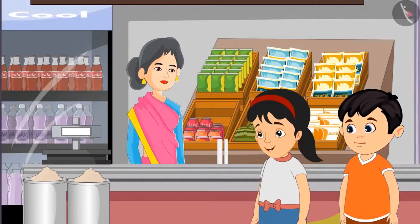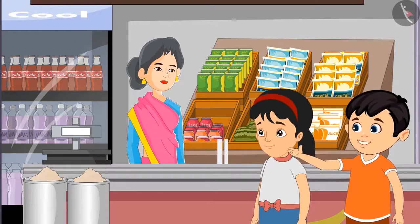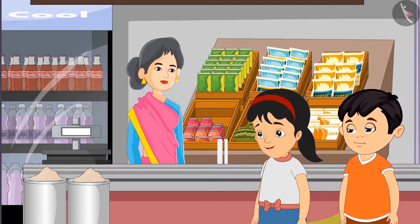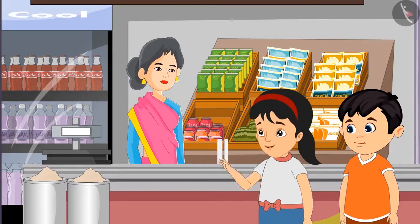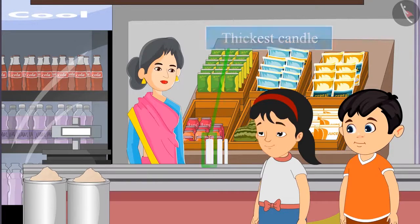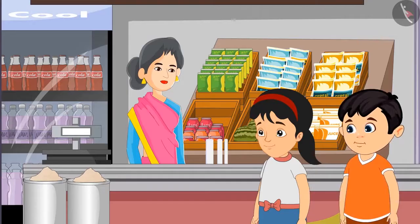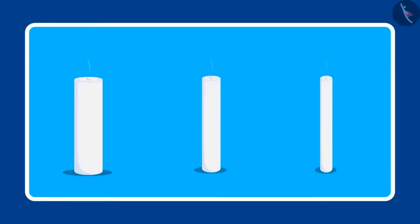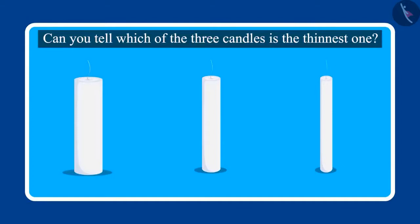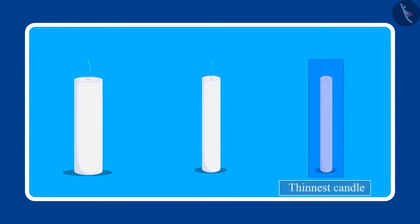Pinky asks, 'Will this thick candle burn all night?' Chotu says, 'Let's take a candle thicker than this.' They ask the aunty to give them the thickest candle. Aunty says, 'Here you go children, this is the thickest candle.' Chotu says, 'Pinky, this candle is the thickest, let us take this.' Children, Pinky and Chotu took the thickest candle. Can you tell which of the three candles is the thinnest? Yes, this is the thinnest candle.